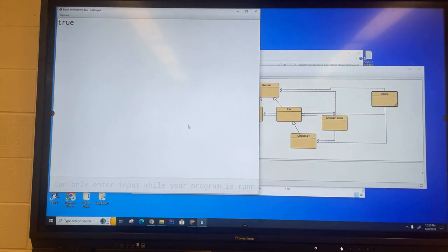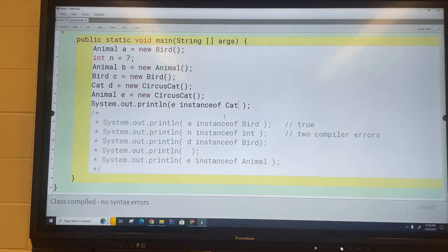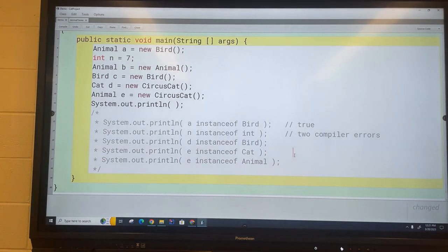If you don't understand why, just ask yourself, does e have an is-a relationship with this class? Is it a cat? It is a cat. It's a special type of cat, but it's still a cat. So you can see that that's true. So this one is true. This one will not compile.